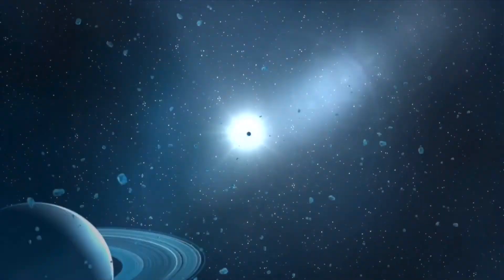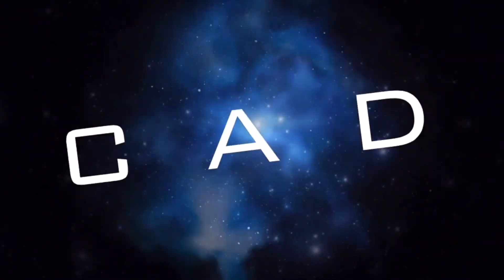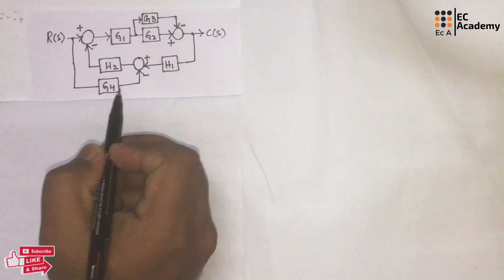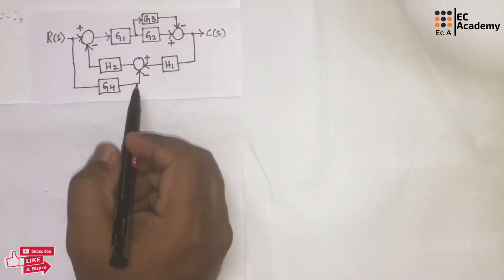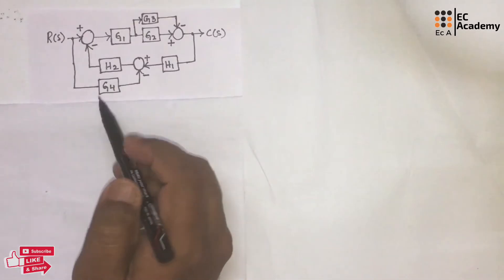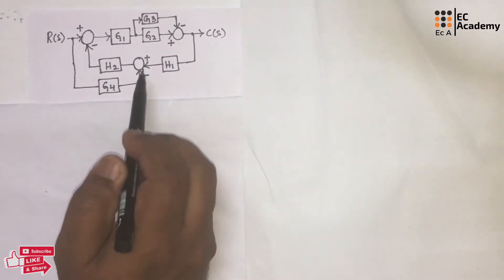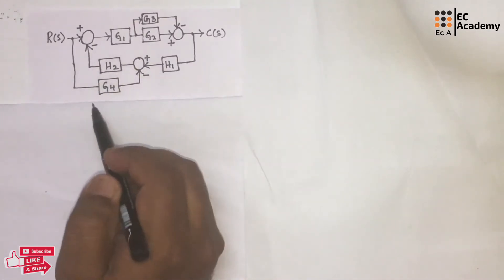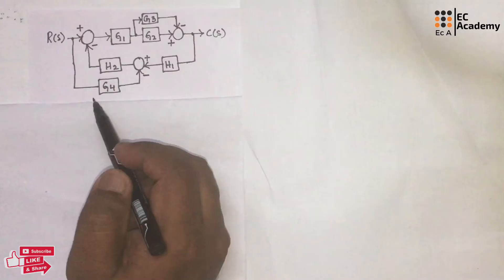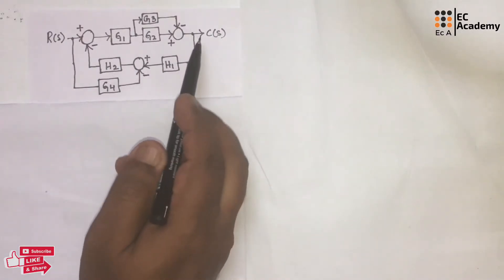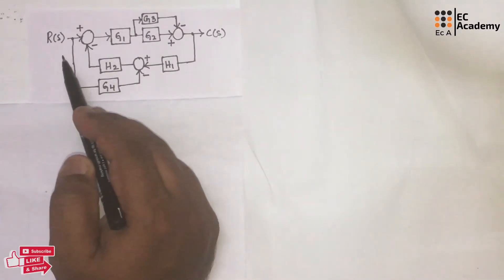Hello friends, welcome to EC Academy. In this lecture, let us understand a problem on block diagram reduction. They have given a block diagram and we need to reduce it and find the transfer function C divided by R.